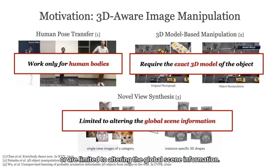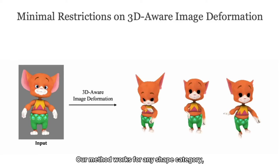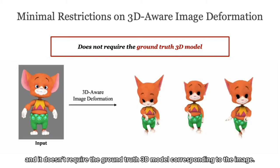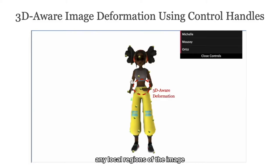Thus, we aim to enable image deformation with minimal restrictions on shape category and deformation type. Our method works for any shape category, and it doesn't require the ground-truth 3D model corresponding to the image. We emphasize that our method can deform the input image in a 3D-aware manner, and it also allows the user to deform any local regions of the image using deformation handles such as keypoints.